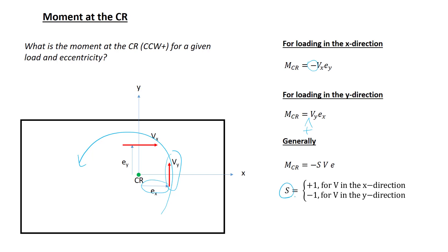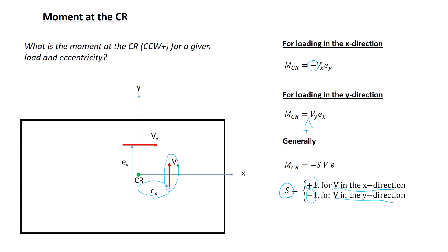For general loading, we can use the same sign term s as before. This is positive for a story shear in the x direction and negative for a story shear in the y direction. Let's do one example: shear acting in the y direction over its moment arm. There is a negative sign in the equation. The force is in the y direction, so s is negative. The shear is acting upward — that's the positive y direction. The eccentricity is rightward — that's the positive x direction. Two negatives give a positive result, meaning counterclockwise, which is consistent with what's drawn.